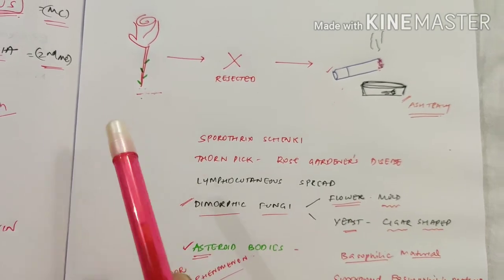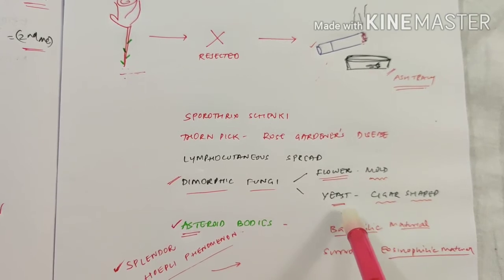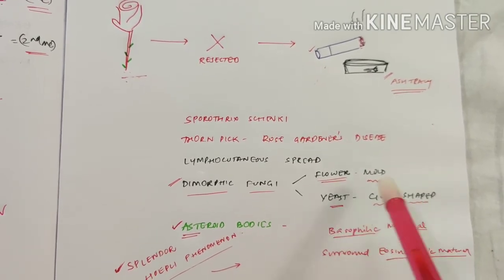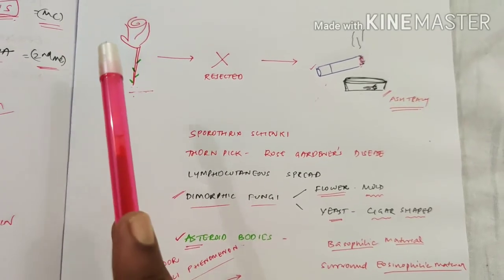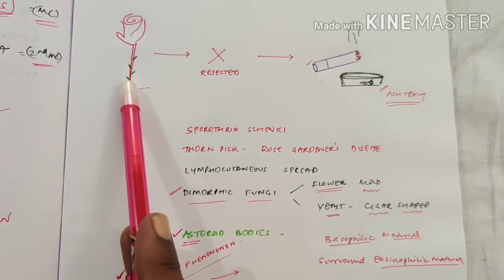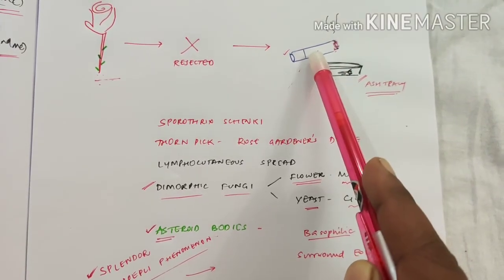It has a flower-shaped sporulation in mold—flower-like mold—and cigar-shaped yeast. With the small story you can remember it has a flower-like sporulation mold and it has a cigar-shaped yeast.